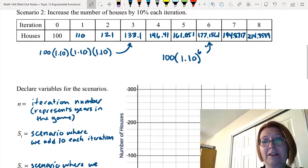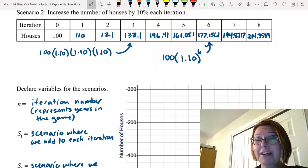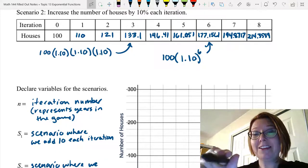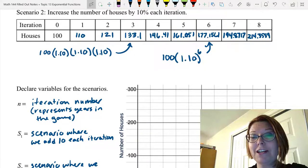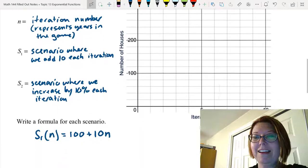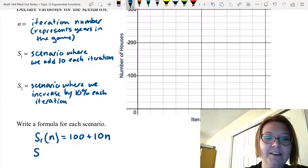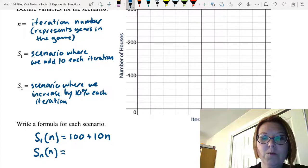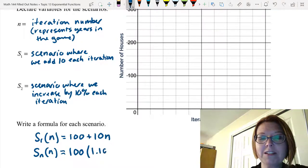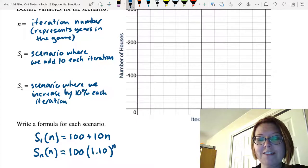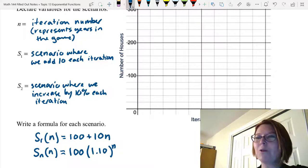We also figured out a formula for the second scenario because we know we can get iteration 6 by doing 100 times 1.10 to the 6th. So our formula for the second scenario, S2(n), we're going to start with 100 and then multiply by 1.10 to the nth. In the 6th iteration it would be 1.10 to the 6th. In the 8th iteration, 1.10 to the 8th.